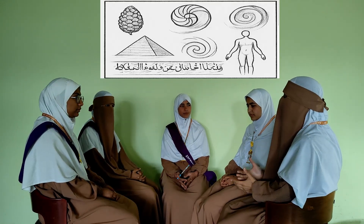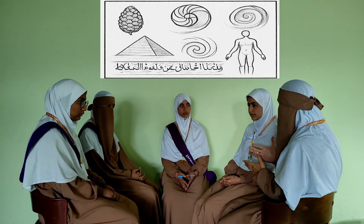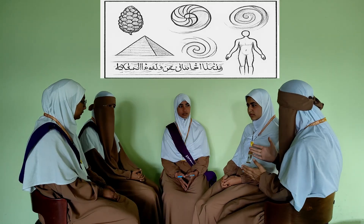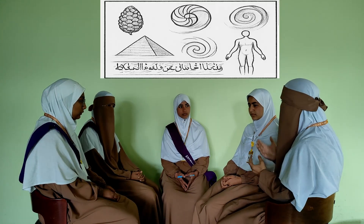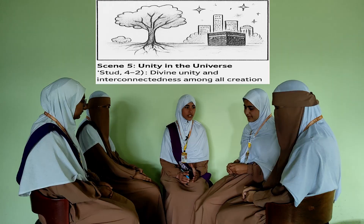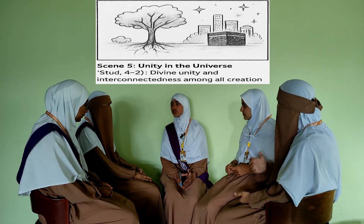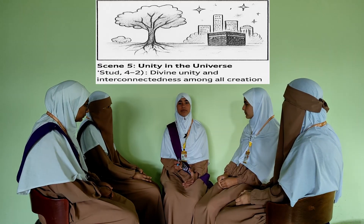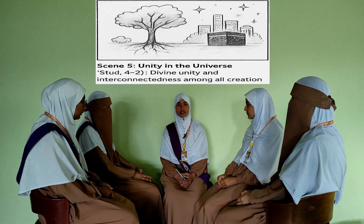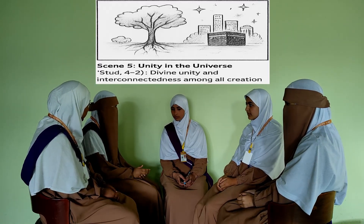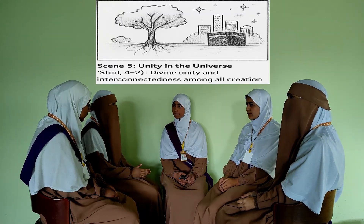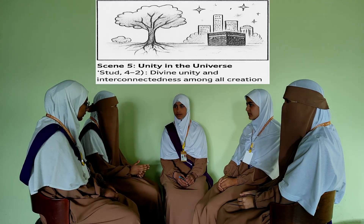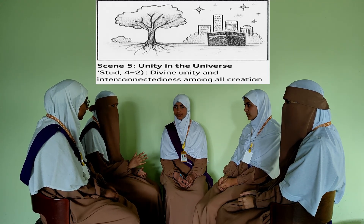Let me add something more on the Fibonacci sequence and the golden ratio in art and architecture. Let's move from nature to human creativity. Did you know that Leonardo da Vinci used the golden ratio in his famous artwork, the Vitruvian Man? And not just da Vinci — ancient civilizations used it too. The Great Pyramid of Giza, the Parthenon in Greece, and even Islamic geometric patterns found in mosques incorporate these proportions. Modern architects use it too — famous structures like the Taj Mahal and the Sydney Opera House incorporate the golden ratio to make them aesthetically pleasing.